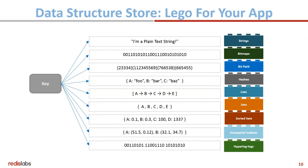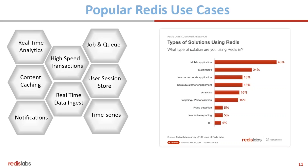As a result of Redis's versatility, it is used in a number of popular use cases, including high-speed transactions, real-time data ingest, job and queue management, and user session store, but also analytic use cases. The types of solutions using Redis include not just mobile, e-commerce, corporate, and social applications, but also analytics, targeting and personalization, fraud detection, interactive reporting, and more.